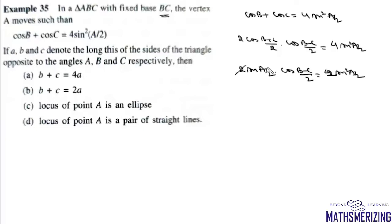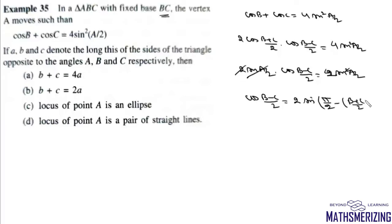We cancel 2 with 2 and also cancel sin(A/2), giving the condition cos((B-C)/2) = 2 sin(A/2). Now we can write A/2 as π/2 − (B+C)/2, and since sin(90° − θ) = cos θ, it becomes cos((B-C)/2) = 2 cos((B+C)/2).